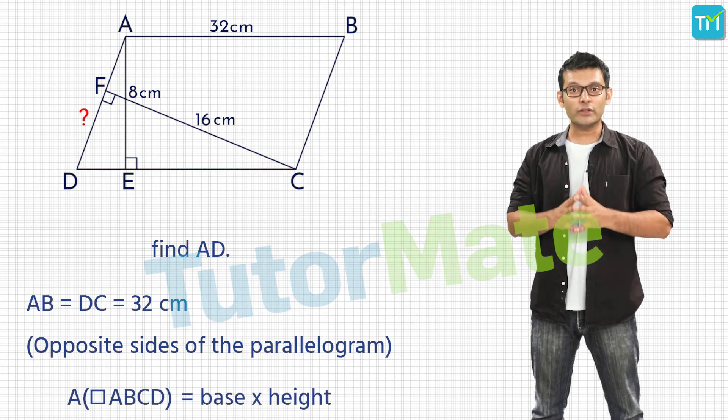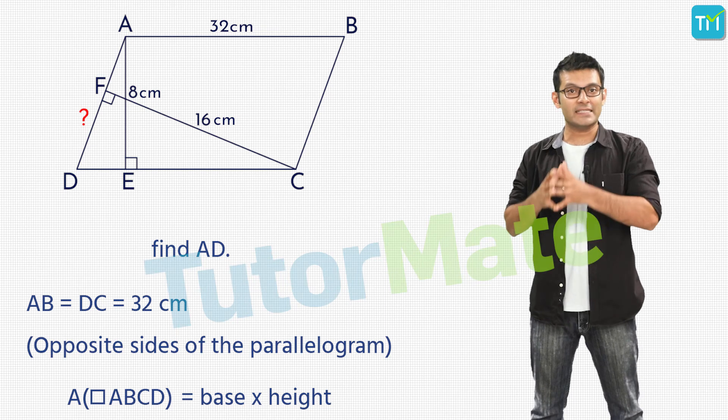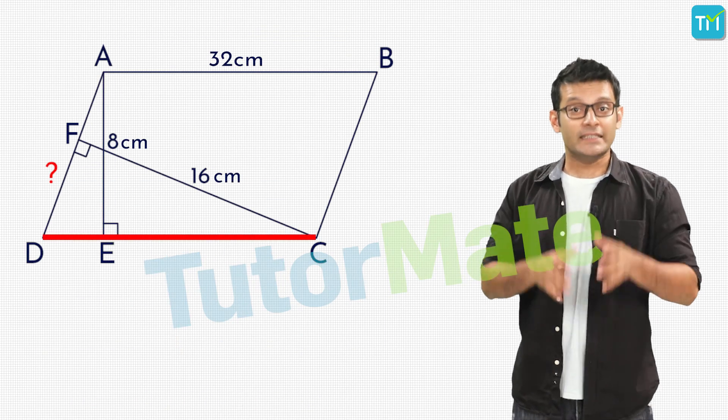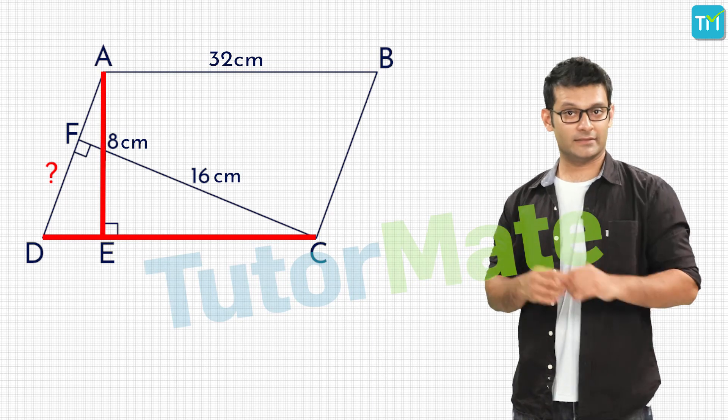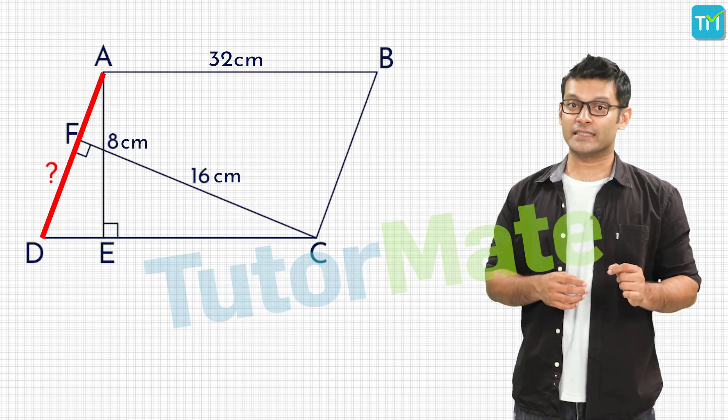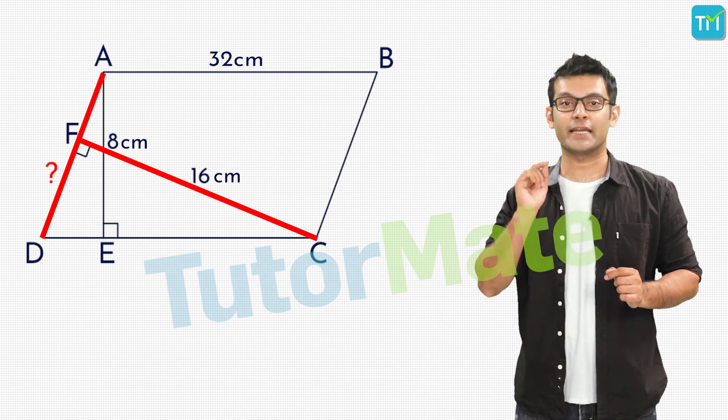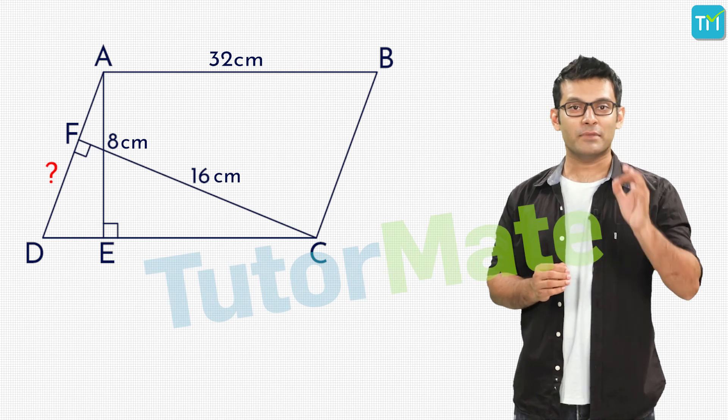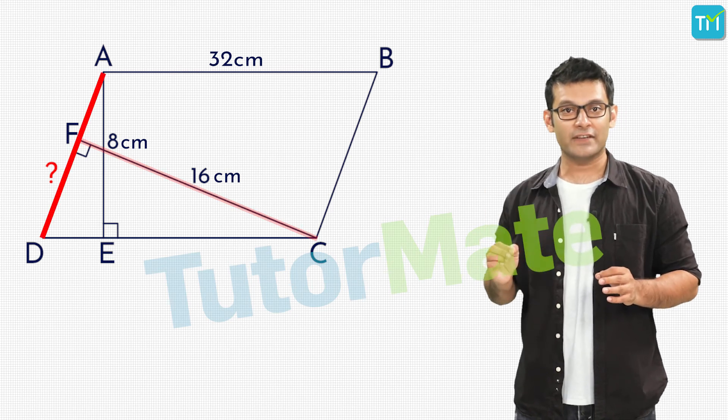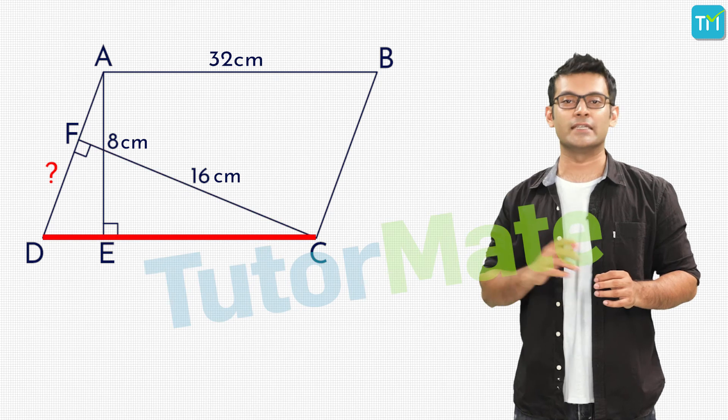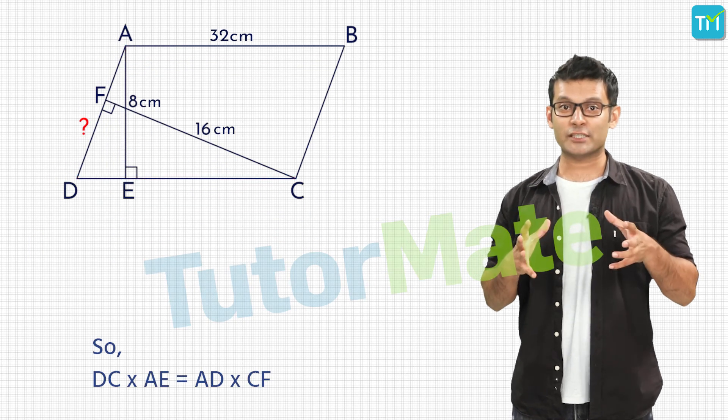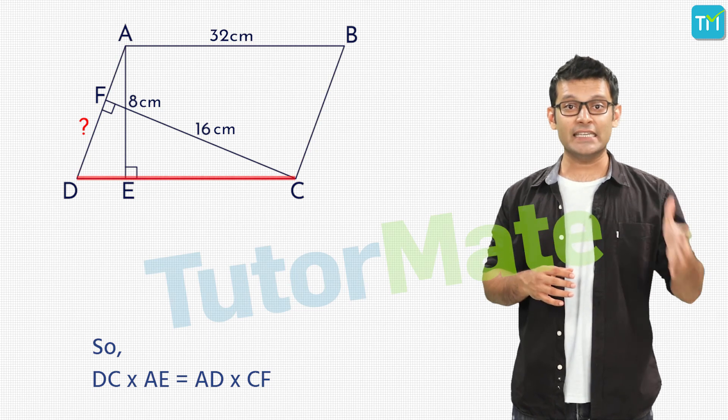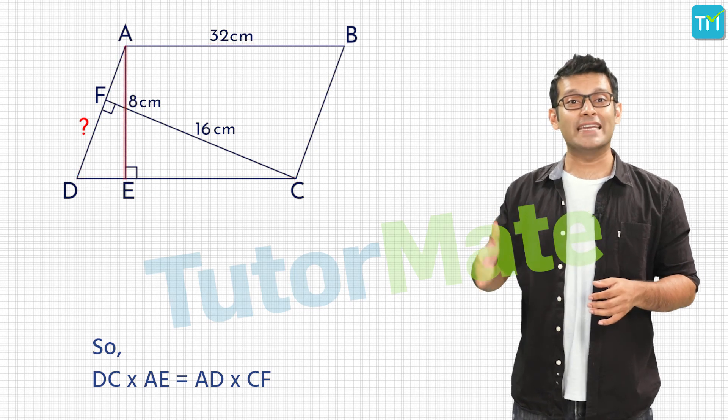So we know that the area of a parallelogram is given by base into height. If we take the base as DC then we know that the height is AE. However, if we take AD as the base then CF would be the corresponding height. Considering either of these cases area of the parallelogram can be written as AD into CF as well as DC into AE. So we can equate both these expressions for the area of ABCD and get DC into AE is equal to AD into CF.